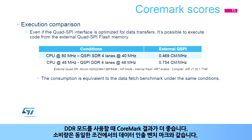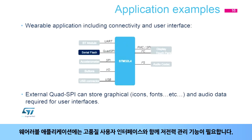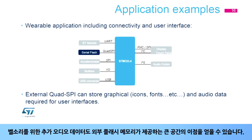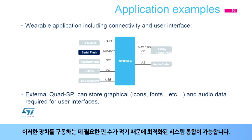Wearable applications require low power management functions together with a high-quality user interface. This can be achieved using the STM32L4's Quad SPI interface to store in an external flash memory all the graphical content needed, including background images, high-resolution icons, or fonts to support multiple languages. Additional audio data for ringtones can also benefit from the large space offered by an external flash memory. The low pin count needed to drive such devices allows for a highly optimized system integration.